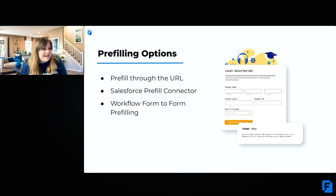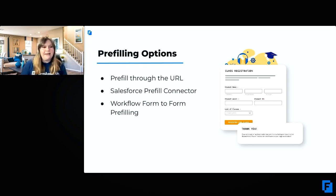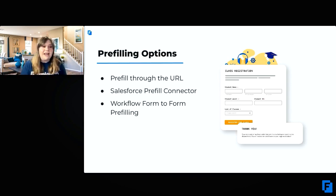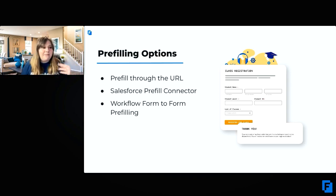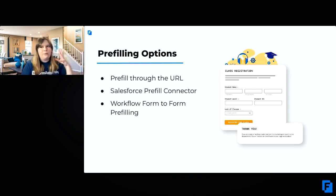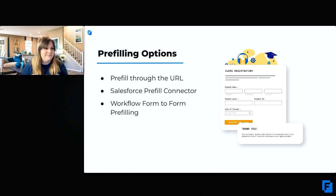The next option is the Salesforce Pre-Fill Connector. This allows you to set up a pre-filled link that tells the Salesforce Pre-Fill Connector what to search and pull into the form. This way, the data going into your form comes directly from your Salesforce, and you're able to pull in multiple records and multiple options into the form.